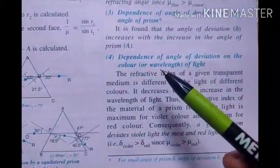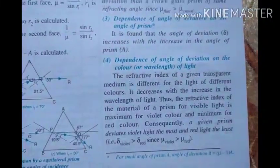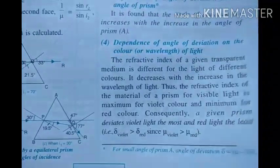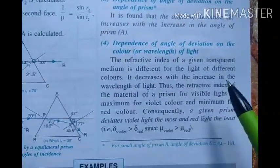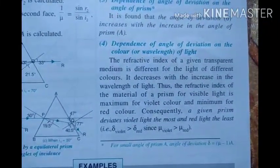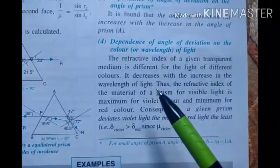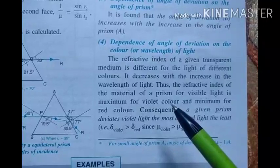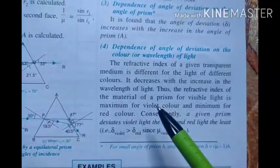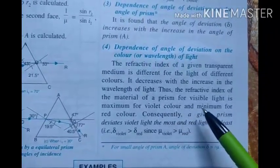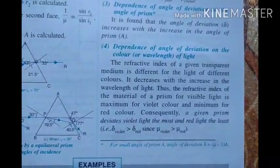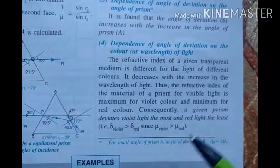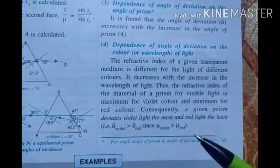The fourth factor is the color of light. The angle of deviation depends on the color of light because the refractive index of a transparent medium is different for different colors — it decreases with increasing wavelength. The refractive index is maximum for violet light and minimum for red light, since red has the maximum wavelength and violet the minimum. Therefore, for a given prism, violet light deviates the most and red light deviates the least.